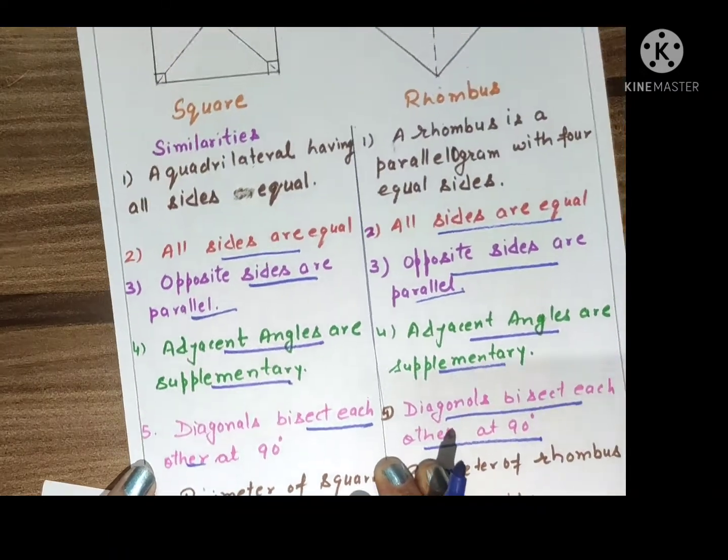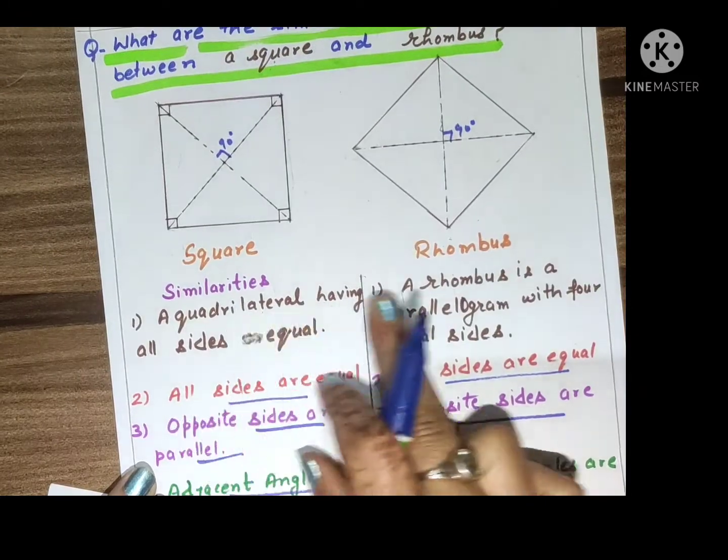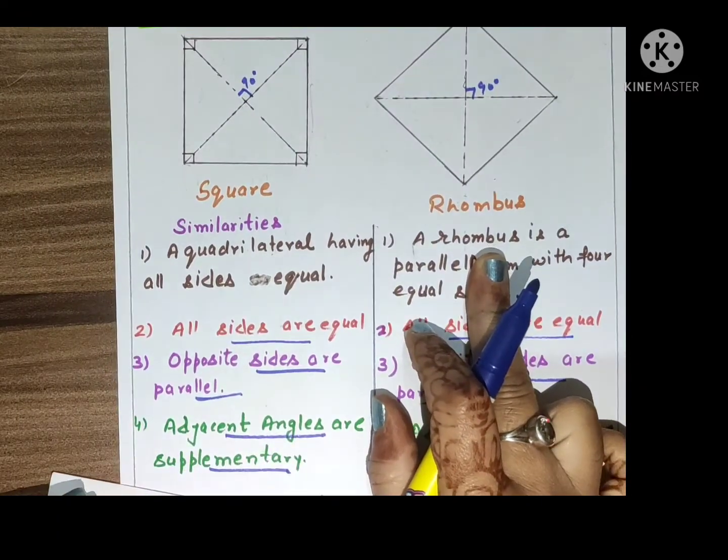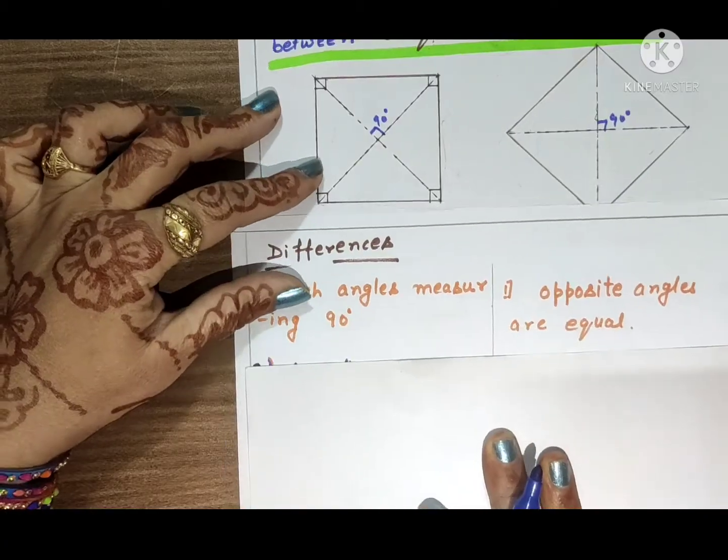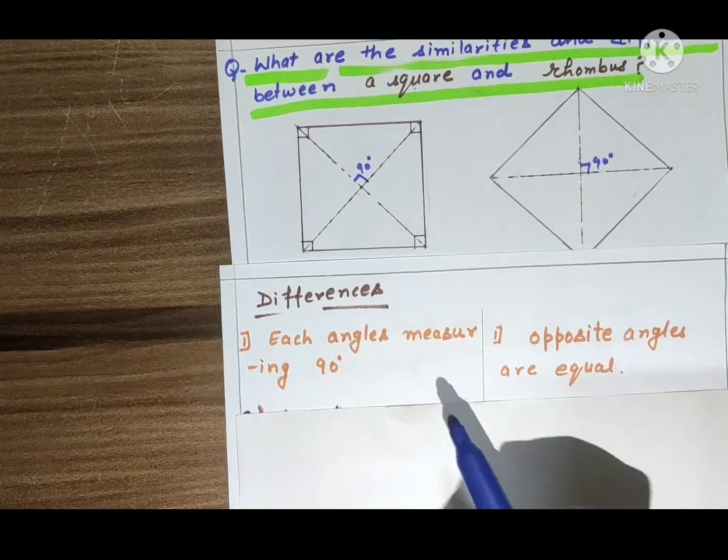These are the similarities of square and rhombus. I hope it is clear. Now we will discuss the differences of square and rhombus.